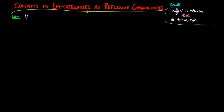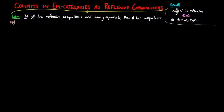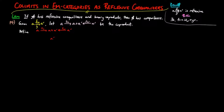We first show that if a category A has co-equalizers of reflexive pairs and binary co-products, then it has co-equalizers. For the proof, if we are given an arbitrary pair of morphisms F and G, let S_A and S_A' be the co-product injections of objects A and A',